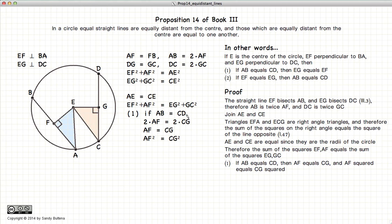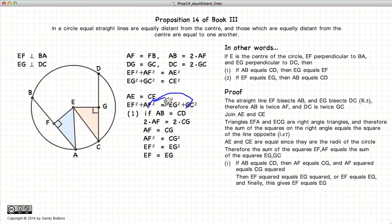Now, going back to this equation here, if we have AF squared and GC squared are equal, then we could just remove them from the equation. And we are left with EF squared is equal to EG squared, or in other words, EF is equal to EG.